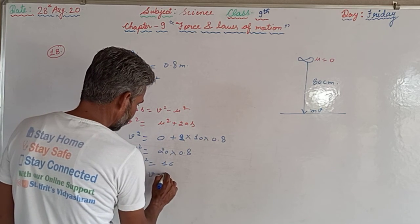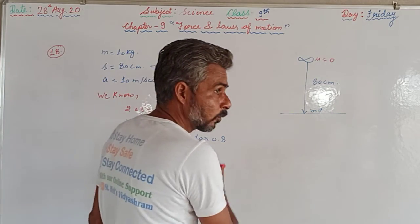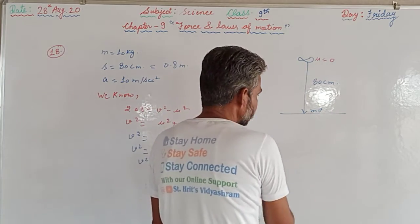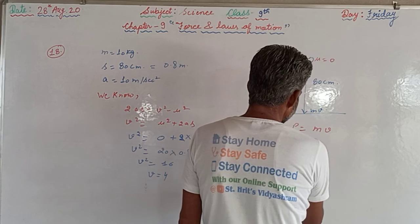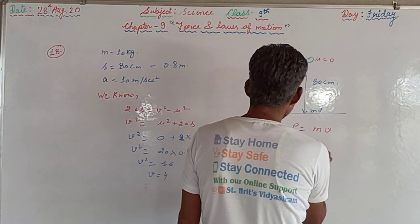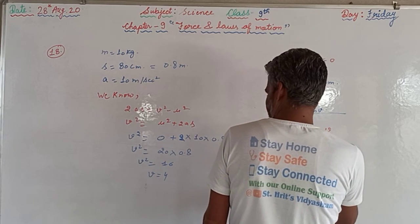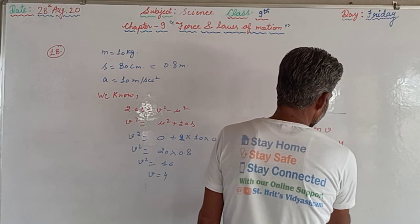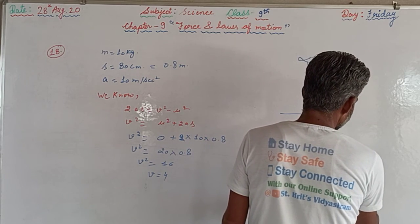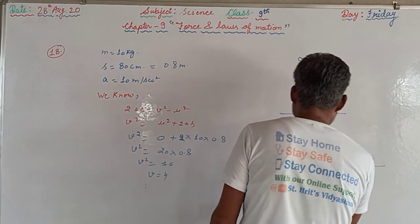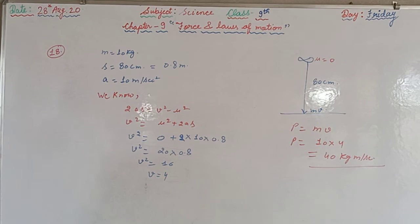The momentum transferred p = m × v = 10 × 4 = 40 kg·m/s. So 40 kilogram meters per second is the momentum transferred by the dumbbell to the ground.